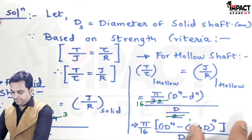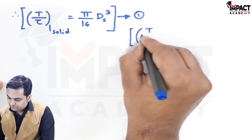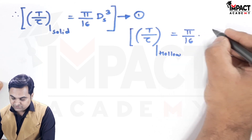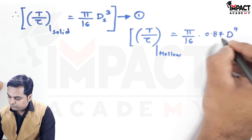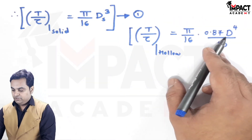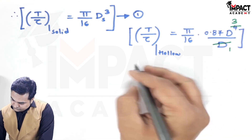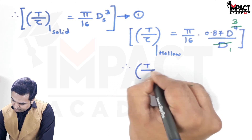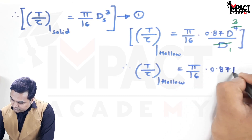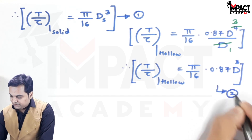After simplification, 1 − 0.6⁴ = 0.87. So T/τ for hollow = π/16 × 0.87 × D⁴ / D = π/16 × 0.87 × D³, where capital D is the outer diameter of the hollow shaft. This becomes equation two.